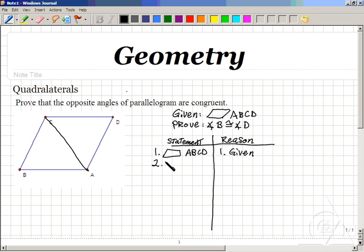So, first, construct segment A, C. How can we do that? Our reason is, two points determine a line.